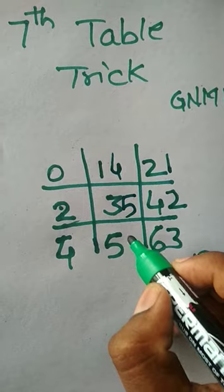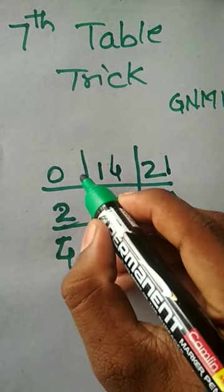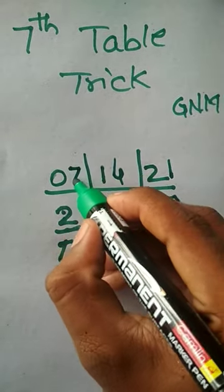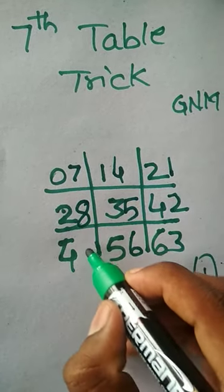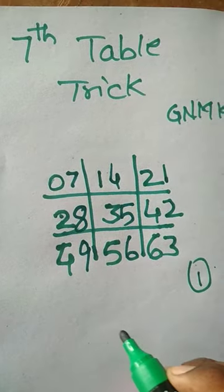You got 3, then next is 4, 5, 6, 7, 8, 9. This is the 7th table trick.